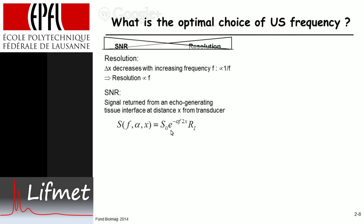So that is the signal that's returned from an echo generating interface. Just note here we've got 2x and the factor k I forgot to put in here, that's the conversion factor between decibels and the exponent.